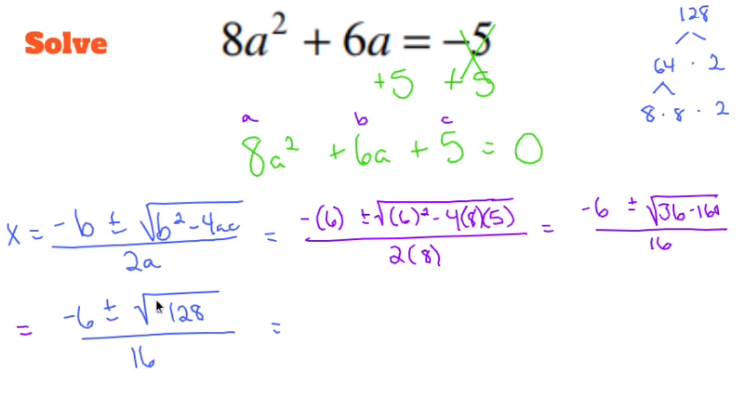And if you notice, I have a negative under there. So we have imaginary numbers. So the first thing I'm going to do after I write out my negative 6, I'm going to leave myself a little bit of space. Since negative 128 is the same thing as negative 8 times 8 times 2, I can bring out an 8. And since it's negative, I can bring out an i. What's left over is 2.